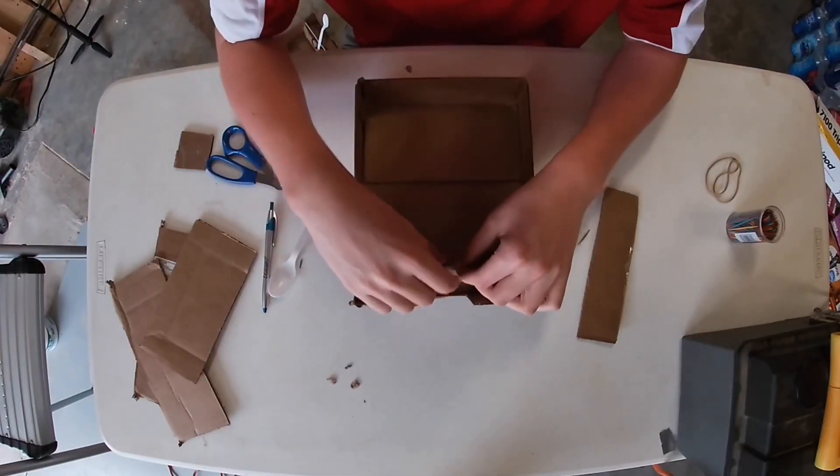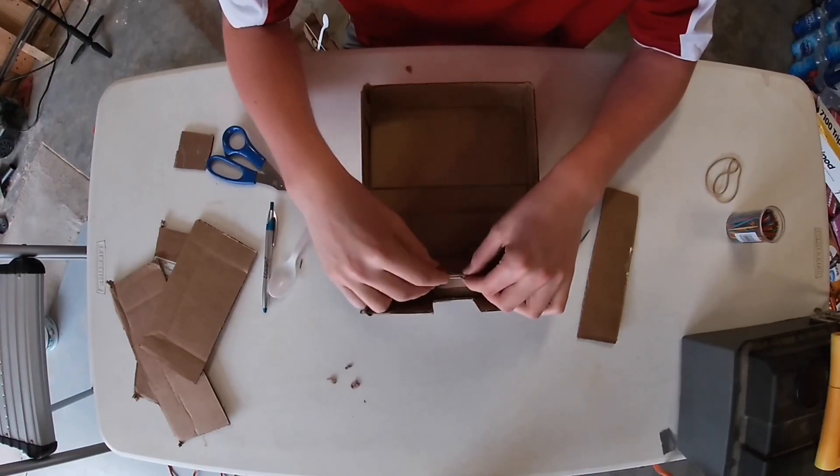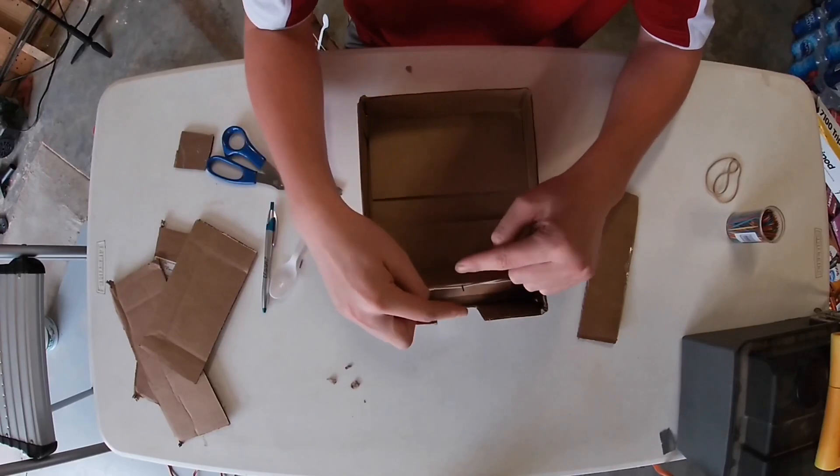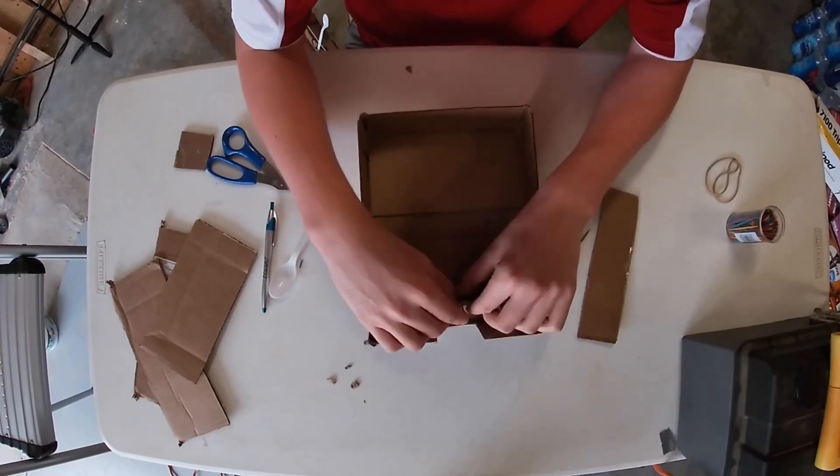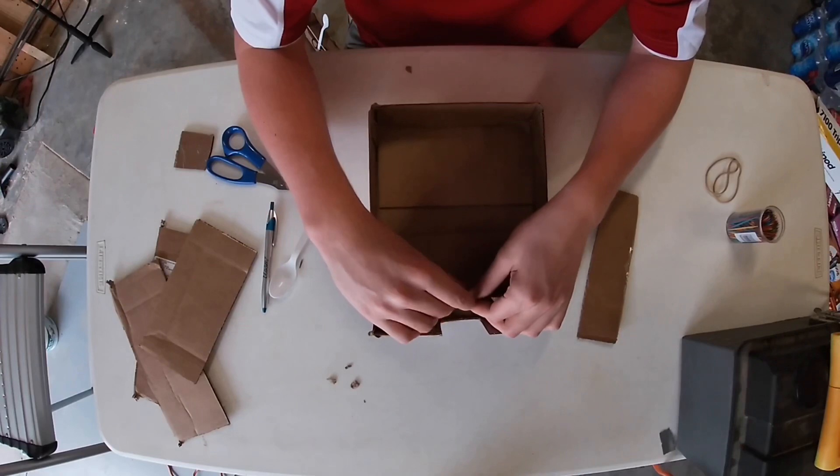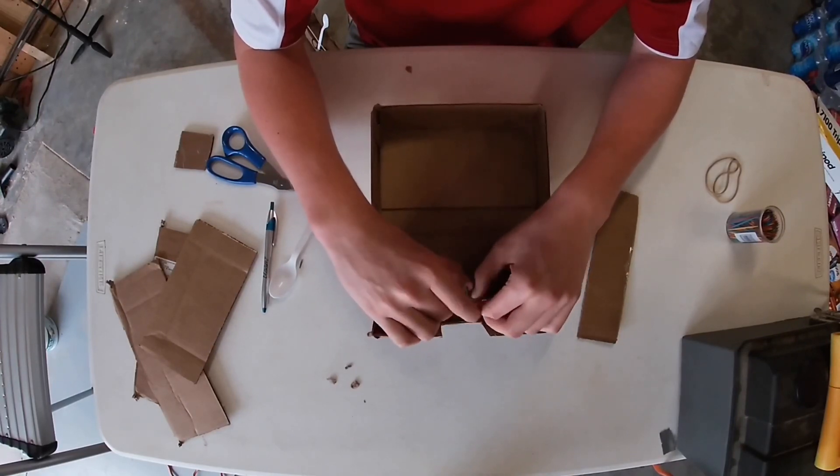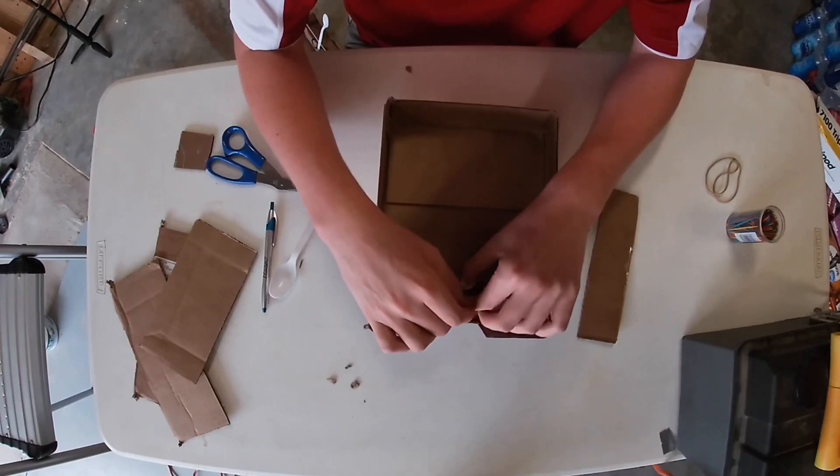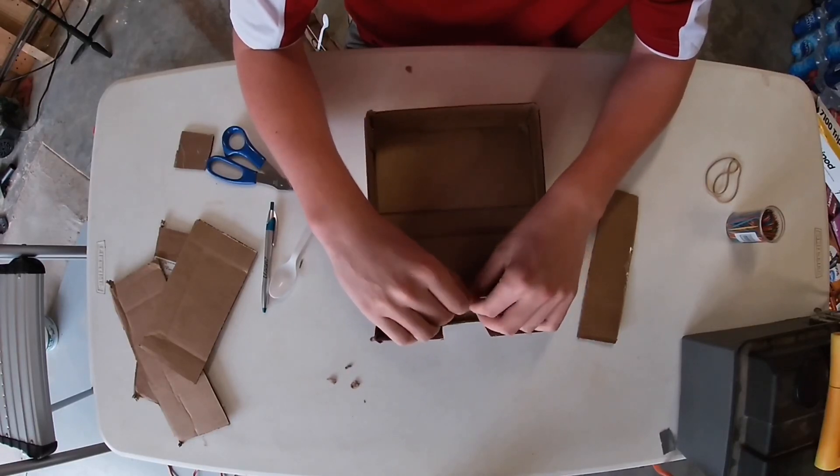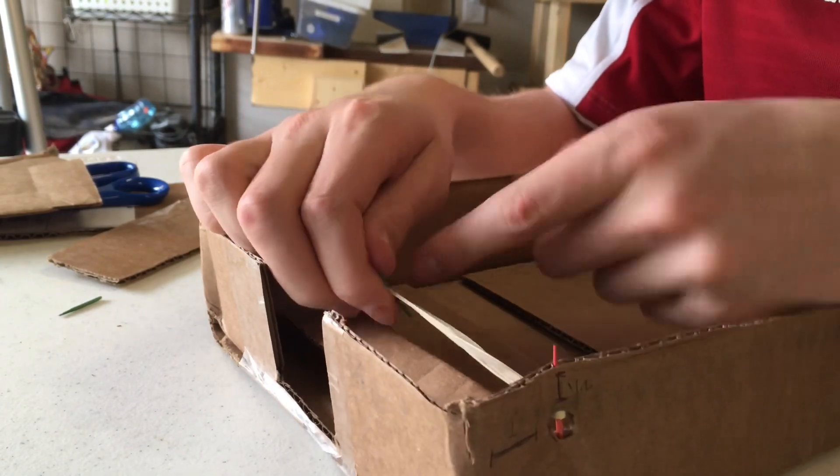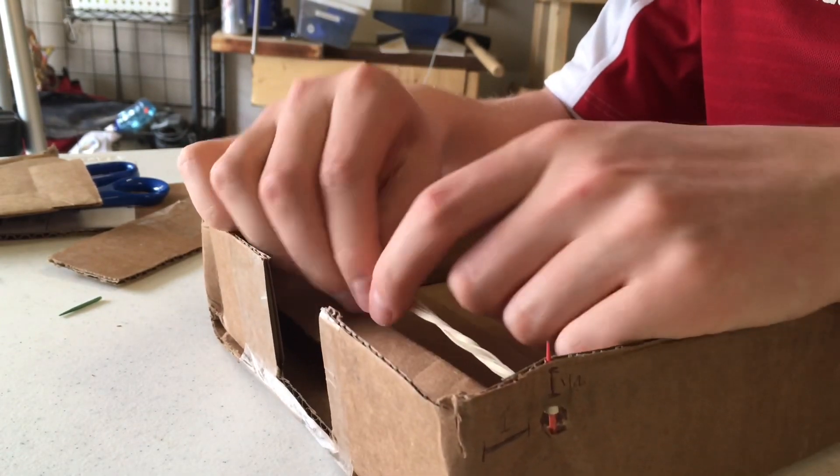The direction you should twist should be opposite of the direction you want it to shoot. So since we want the spoon to launch this way we're going to twist the rubber bands this way. The tighter you twist it the stronger the catapult is going to be. If you want it to shoot really far then twist it up a lot. If you don't want it to shoot very far then twist it up a little bit, but you can tweak this once you have the spoon in by just twisting it up more or unwinding it a little bit.